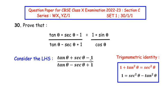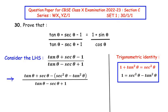In place of 1 we substitute sec² θ − tan² θ. So we get tan θ + sec θ minus (sec² θ − tan² θ) in the numerator, while the denominator stays the same.